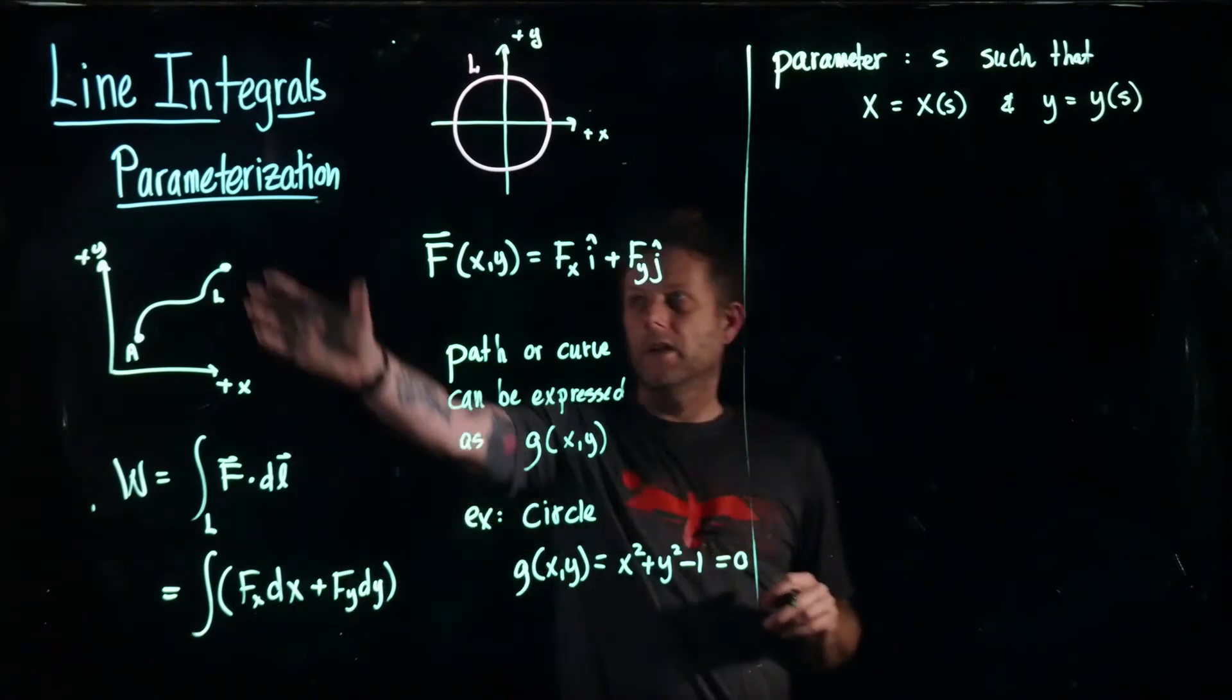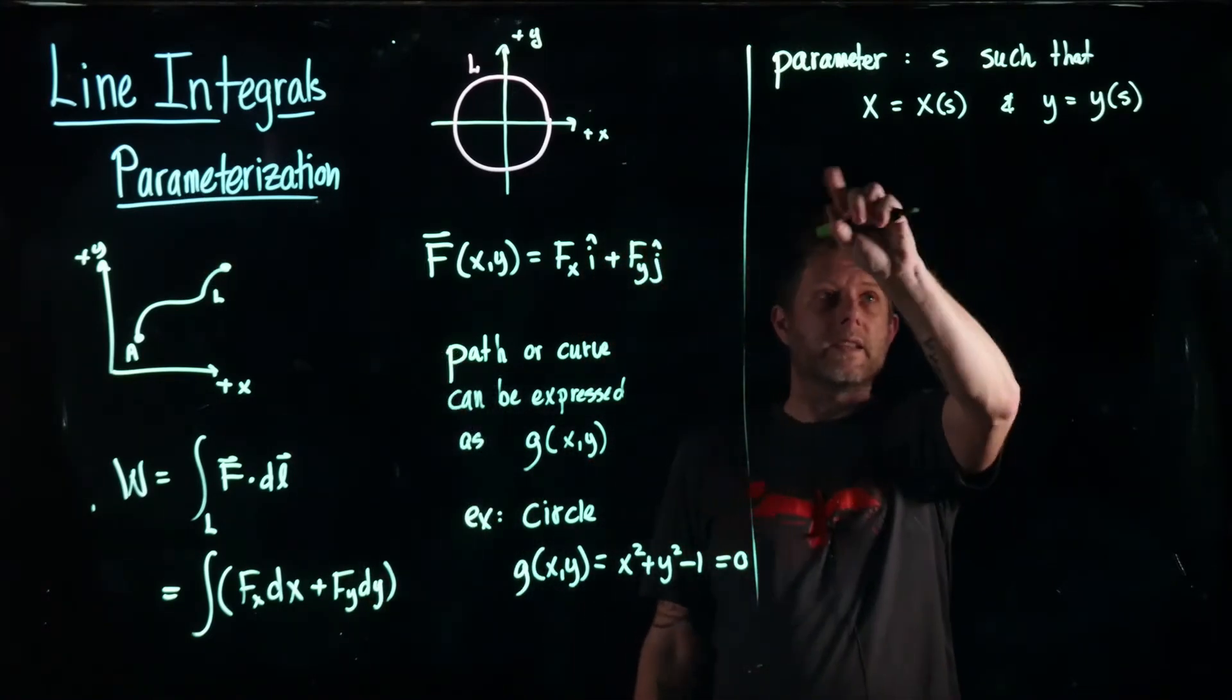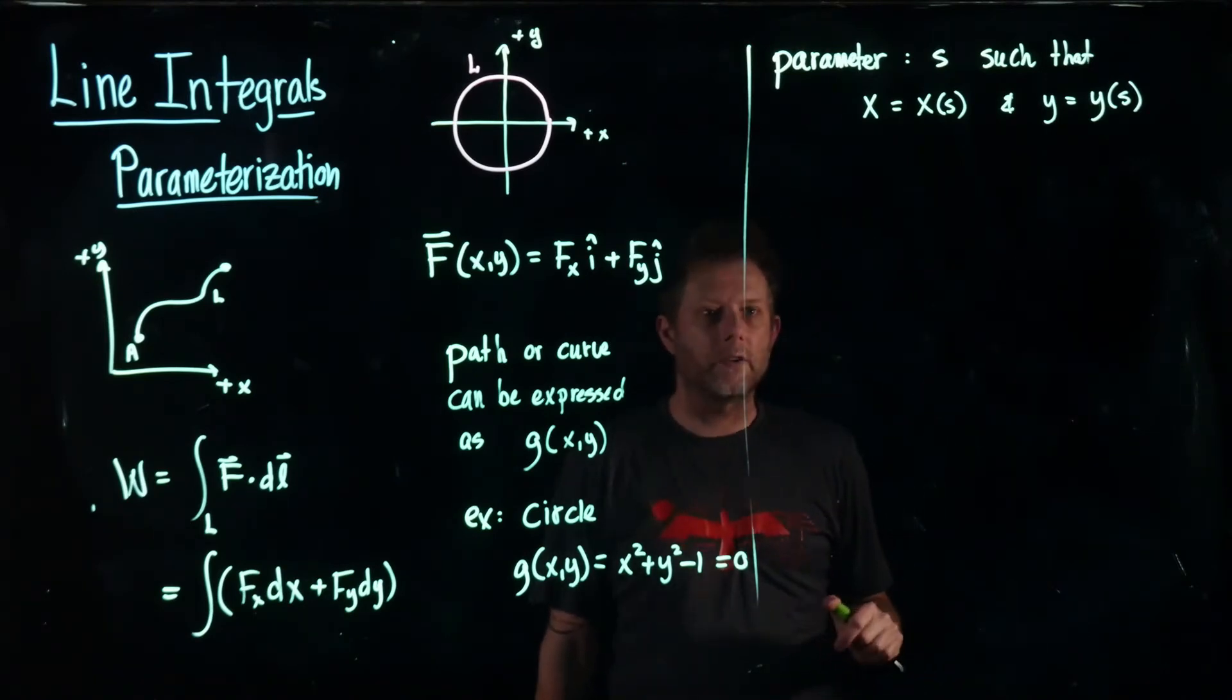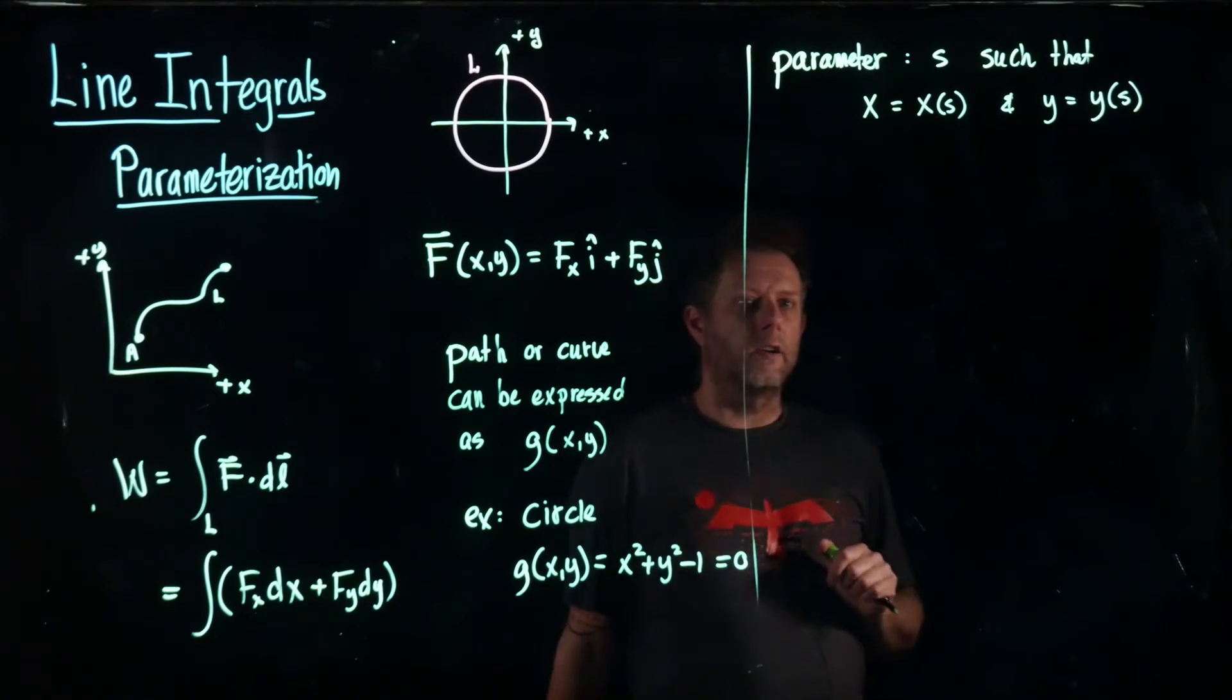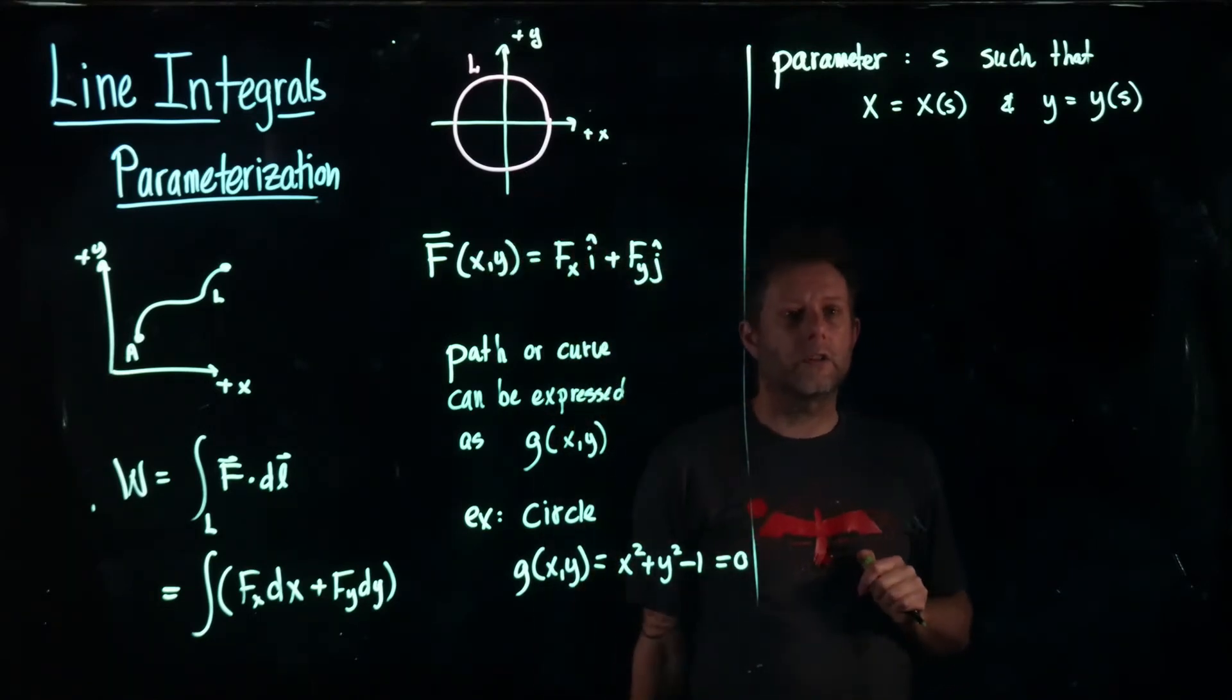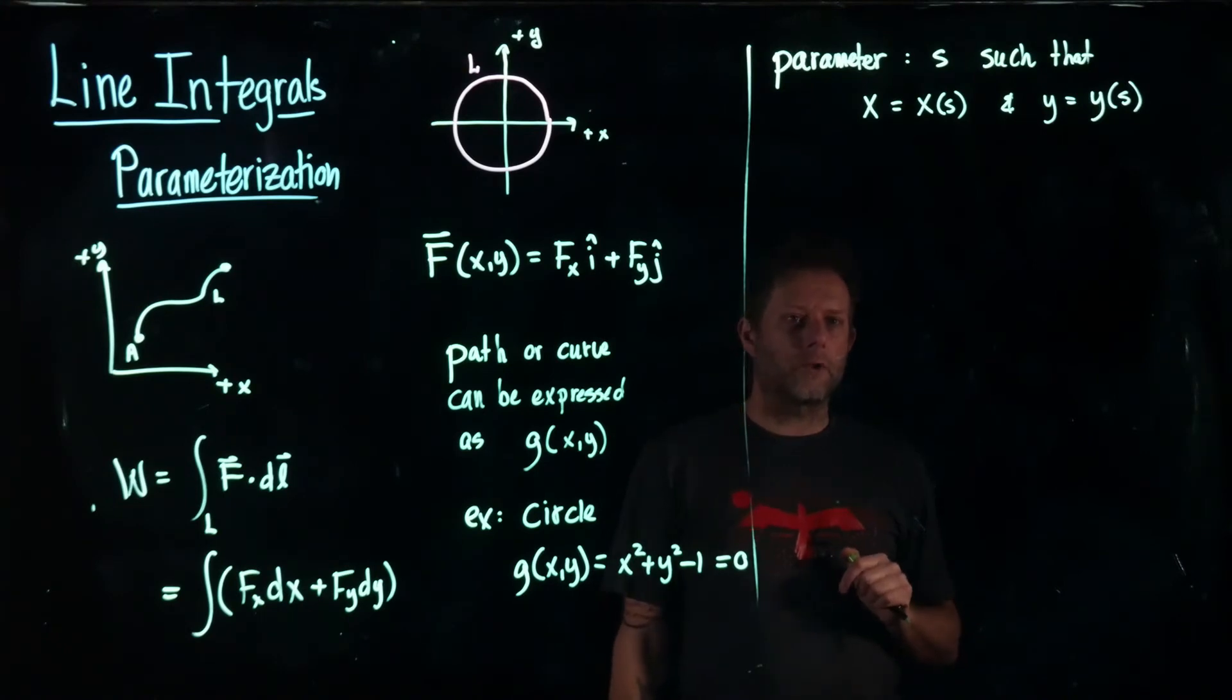That's why we call this parameterization because we parameterize our coordinates x and y in terms of s and of course that means that this function for this line or circle, in this case circle, line or curve can also be expressed in terms of s.